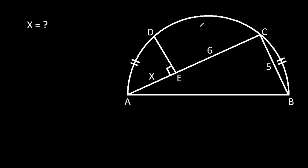In this video, we have been given a semicircle in which BC is 5, CE is 6, arc BC is equal to arc AD, and AE is X. We have to find X.